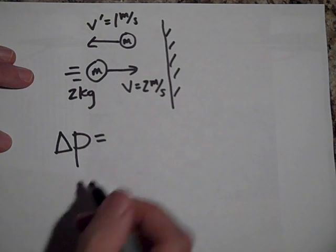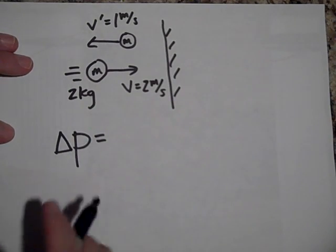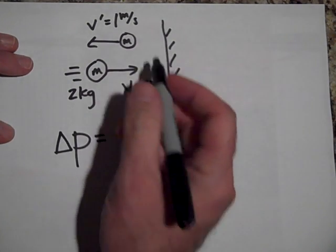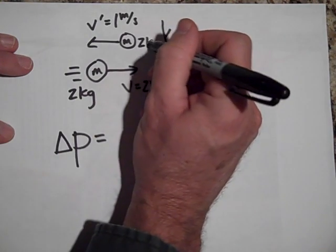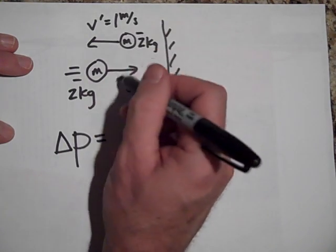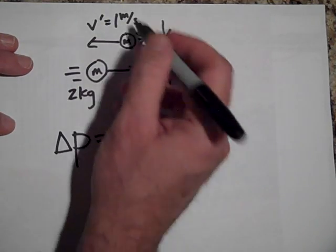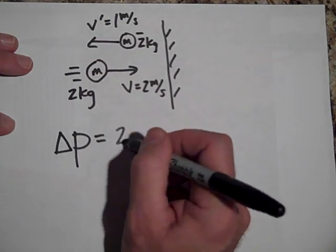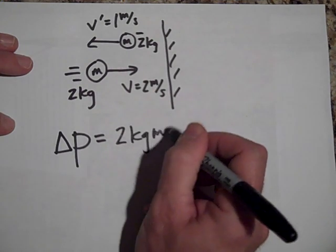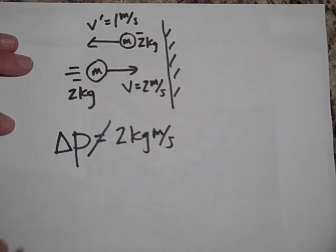Okay, a lot of times they'll ask what is the change in momentum, and people get this wrong all the time because they just multiply. That's 4 and this is 2 kilograms again still. So now it's heading back the other way. And so if that's 4 and that's 2, they think the change in momentum is 2 kilograms meters per second, but no, that's not right.